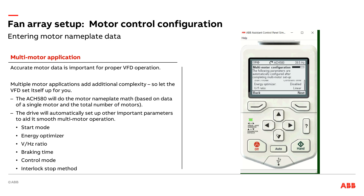Your volts-per-hertz ratio — similar to the previous conversation — it's just more reliable with a linear configuration than a squared configuration for your volts-per-hertz ratio in a multiple motor application with induction motors. The magnetization time relates to how long we brake the motors. We talked about braking first, bringing motors to a stop — three-quarters of a second is how long it's going to brake those motors before ramping them back up. It's also letting you know that we're running in scalar mode. With induction motors in a multi-motor application, scalar mode gives you better control and reliability.